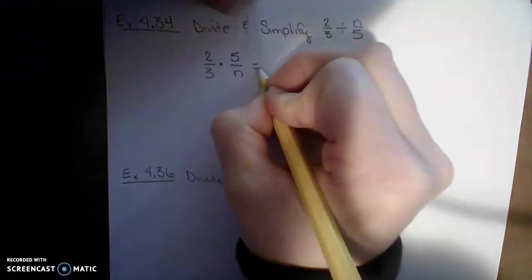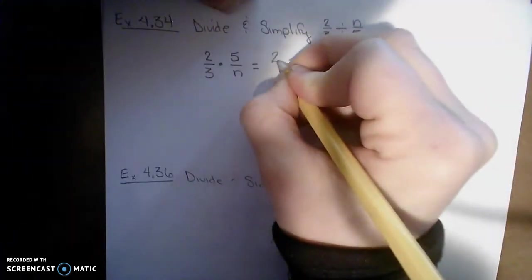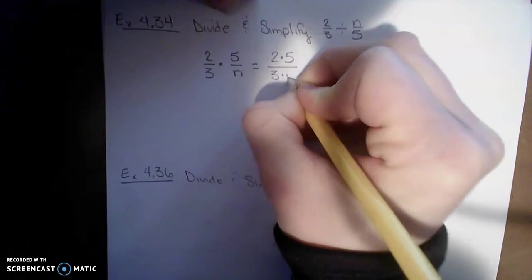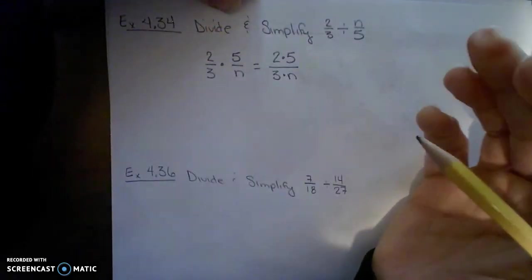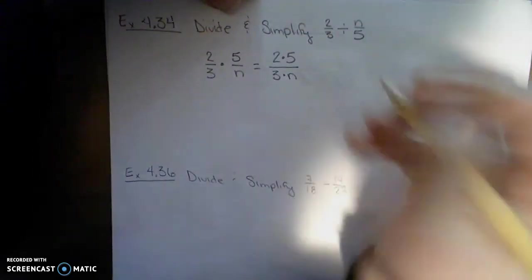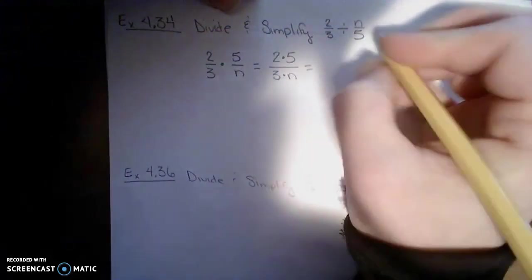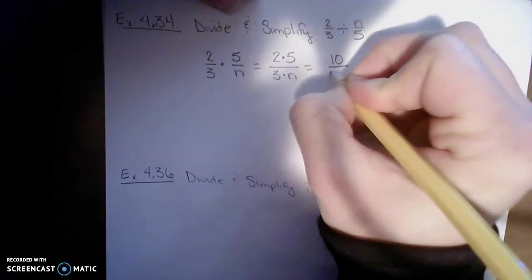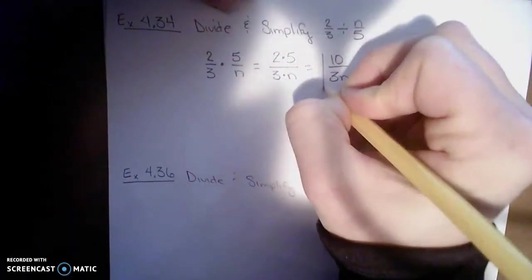All right, so now to multiply these fractions. Just write 2 times 5 in the numerator, 3 times n in the denominator. See if there's any common factors. There are not. So I'll go ahead and finish the multiplication. 10 over 3n. And we're done.